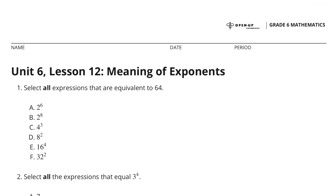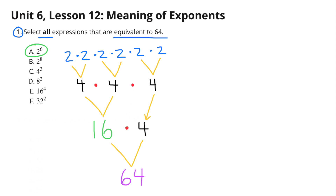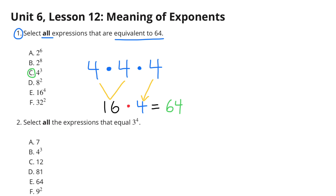Unit 6, Lesson 12: Meaning of Exponents. Problem 1 — select all expressions equivalent to 64. A: 2 to the sixth power means 2 times 2 times 2 times 2 times 2 times 2. That gives three sets of 2 times 2, which is the same as 4 times 4 times 4. 4 times 4 equals 16, and 16 times 4 equals 64. So 2 to the sixth power equals 64.